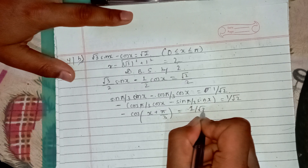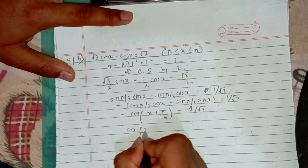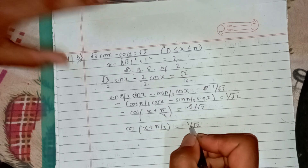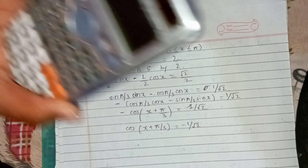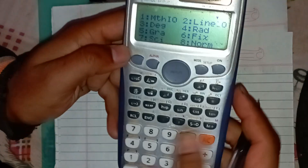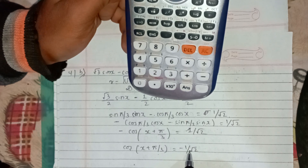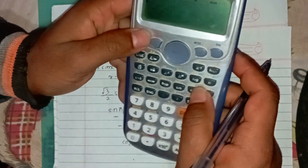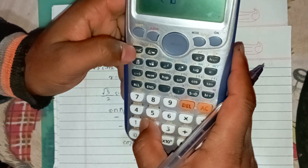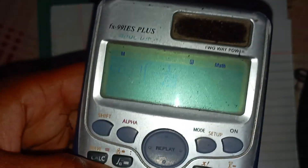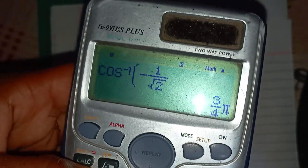We get 1 by root 2. We use cos pi by 3 and get minus 1 by root 2. The cos value is minus 1 by root 2. Using shift mode in radian, cos inverse of minus 1 by root 2 gives 3 pi by 4.